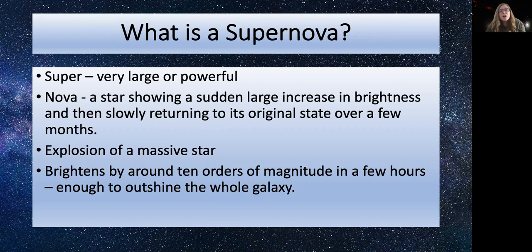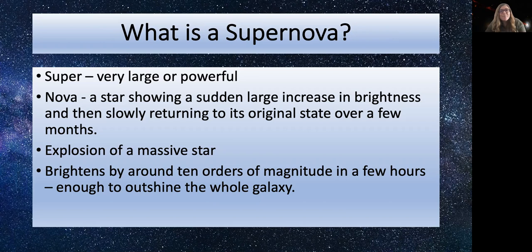Supernovae played an important role in the history of science because they proved that the idea that stars were eternal and unchanging was wrong — this had dominated Western scientific thought since the time of the ancient Greeks. It was thought that the sky didn't change, that it just stayed the same every time we looked at it. But the discovery of supernovae proved that it did change.